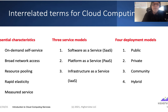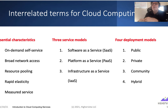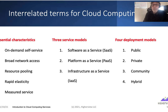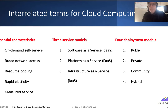The interrelated terms for cloud computing include five essential characteristics: on-demand self-service, broad network access, resource pooling, rapid elasticity, and measured service. There are three service models: software as a service, platform as a service, and infrastructure as a service. And there are four deployment models: public — think of a public library — private, community, which is shared, and hybrid, some sort of mix of the three.